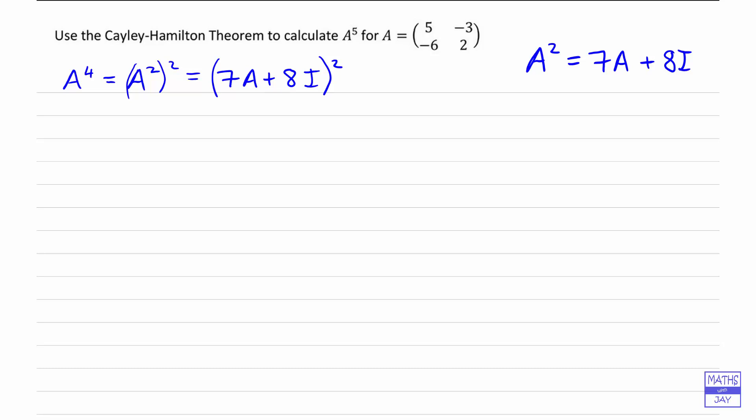So what we're going to do is, by simplifying this, we're going to find that A⁴ can be written as something times A plus something times I. And then, one stage further, our final answer when we work out A⁵, we'll also find that A⁵ can be written as something times A plus something times I. In fact, A to the power of anything can be written in that way.